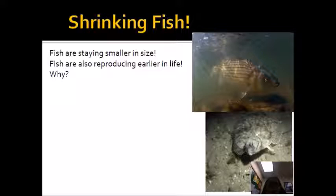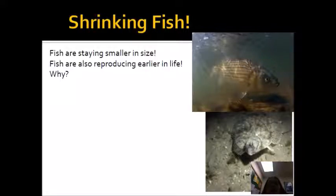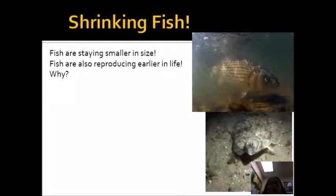In our local waters, fish are staying at smaller sizes. There is a size requirement for fishing — a fish must be a certain size to keep; otherwise, you throw it back. Scientists hypothesize this is due to excessive fishing, because if a fish is above the required size, it gets taken home and eaten. So it is beneficial to be a smaller size — small fish live long enough to reproduce, whereas larger fish are likely to be caught and do not survive long enough to reproduce.